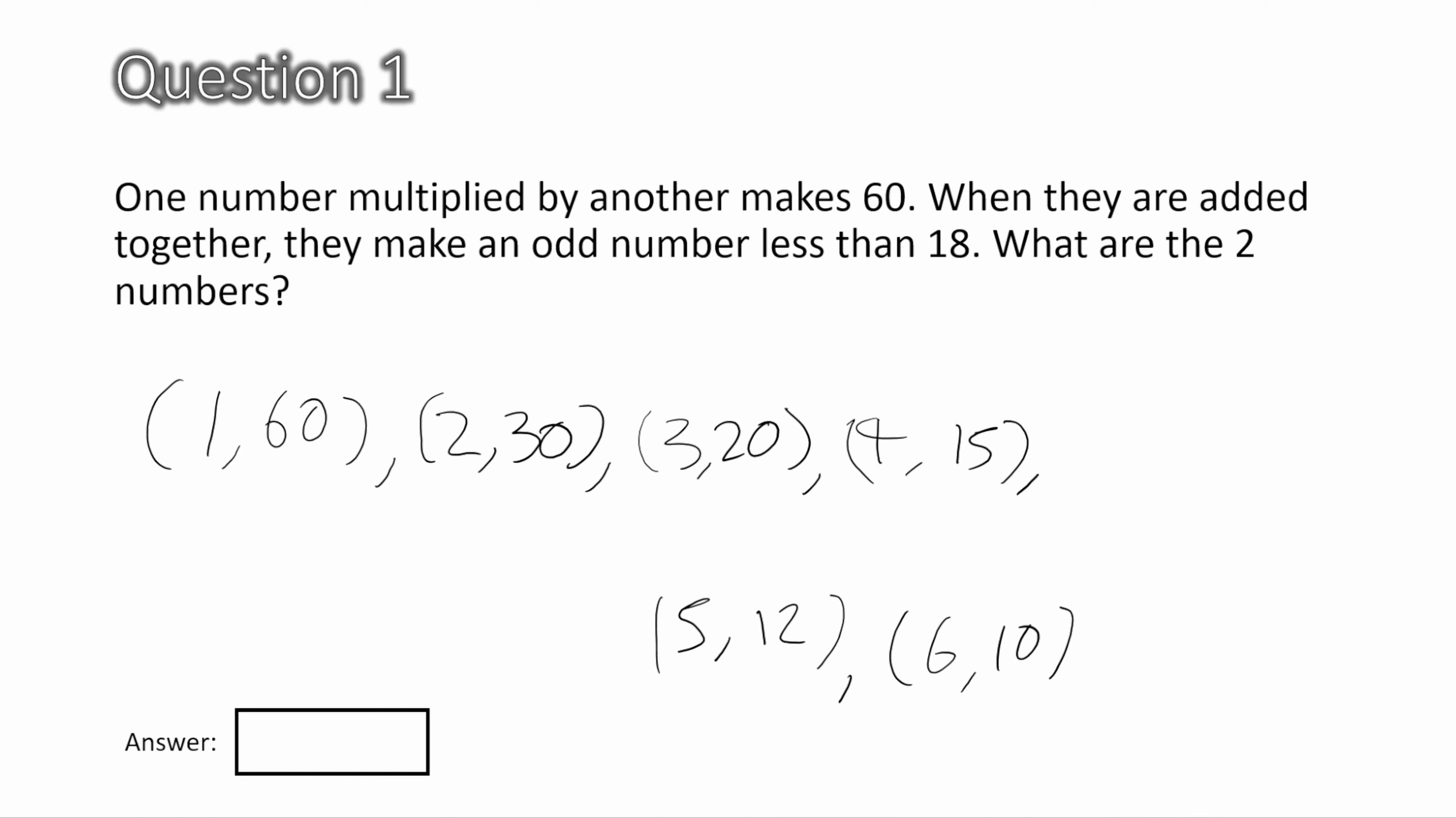Okay, these are all the factors of 60. Now we need to find out all the sums of these factors, because the second part of the question says, when they are added together, they make an odd number less than 18. Let's add them all together. All right, I've circled all the sums of the numbers. Now we need to find the odd number that's less than 18. So 61, 32, 23, and 19 are all bigger than 18. Now that leaves us with 17 and 16. 16 is an even number, and we want an odd number. And 17 is both an odd number and it's less than 18, which means the two numbers are 5 and 12.